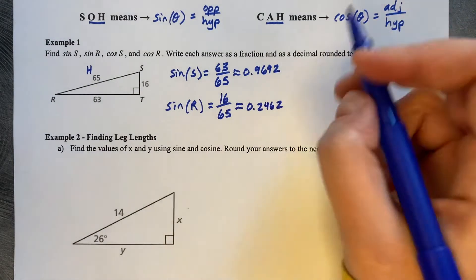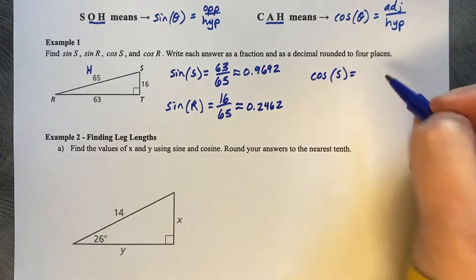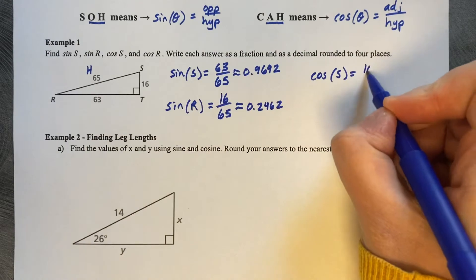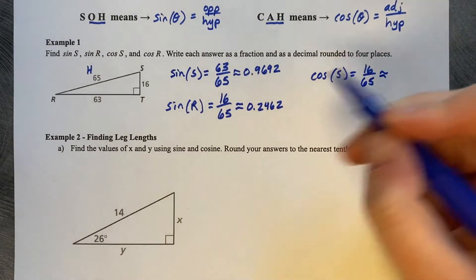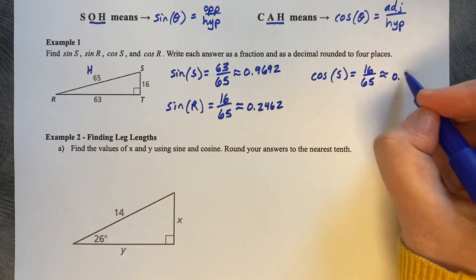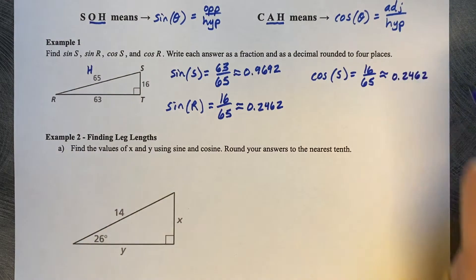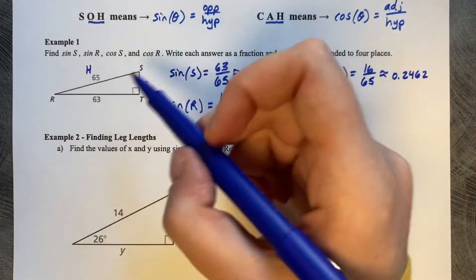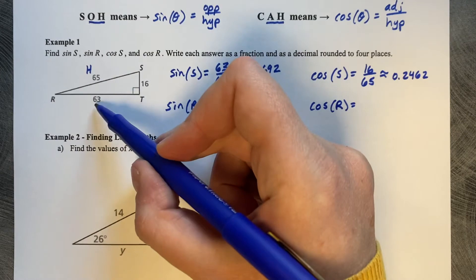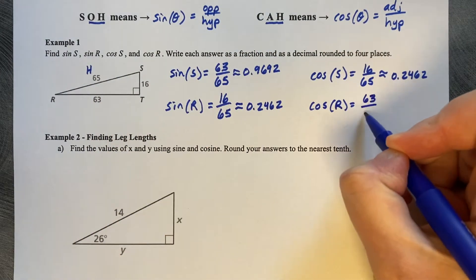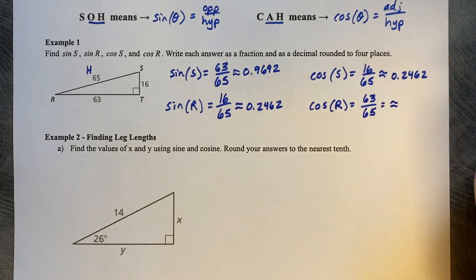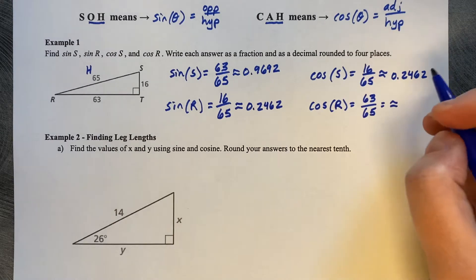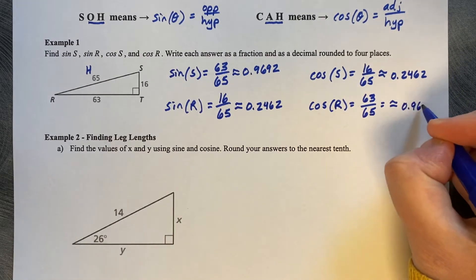Now the cosines. The cosine of S is the adjacent over the hypotenuse, which is 16 over 65 — and we already found that: 0.2462. The cosine of R is the adjacent from R, 63 over 65, and you can see they switch based on which angle you're referencing — approximately 0.9692.